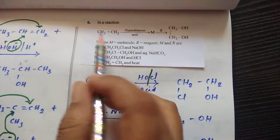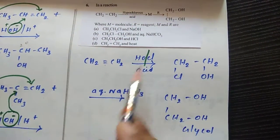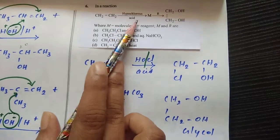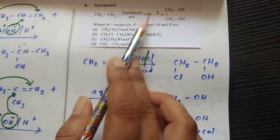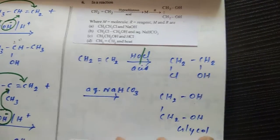So for the next question: in a reaction, ethylene undergoes reaction with hypochlorous acid, that is HOCl. If it reacts with this, then M is some reagent and it gives glycol. Then what is M and R is your question.